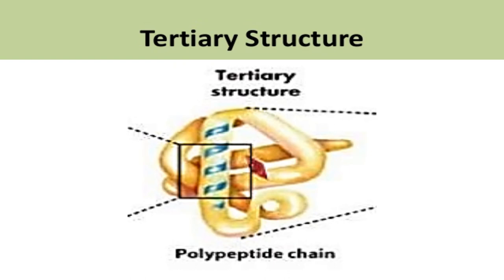Tertiary structure is the three-dimensional conformation of a polypeptide. Besides hydrogen bonds, sulfide bonds, ionic interactions, and hydrophobic bonds are present in tertiary structure. It consists of helices, sheets, bends, turns, and loops that resemble and form a domain. A domain is a section of a protein structure which performs a particular chemical or physical task, like binding of substrate or other ligands, anchorage of protein to the membrane, or interaction with regulatory molecules.